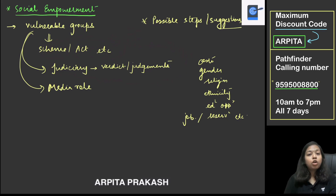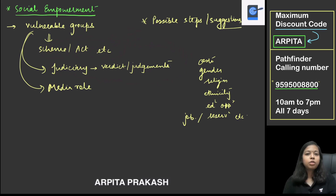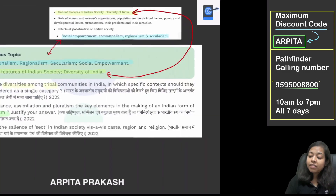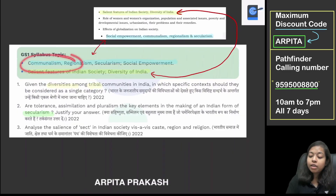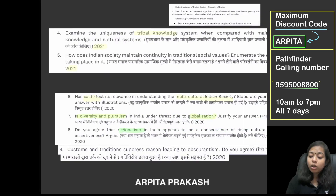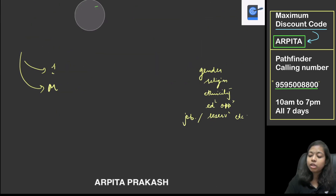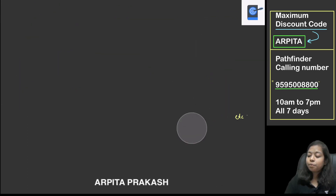Apart from that, we can look at socially disadvantaged groups or vulnerable groups — what is the concept of social empowerment, why is it important, et cetera. Good examples will aid your answers. The next topics are communalism, regionalism, and secularism. Let's understand communalism first. Broadly, we need to first clear the meaning and understanding — what these concepts are. We can talk about characteristics, historical examples and incidents from India in both national and international contexts.